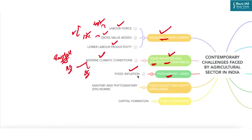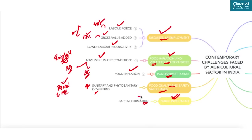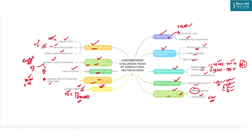Food quality and safety is a challenge as well — Asian and Middle Eastern countries remain the major destinations for Indian agricultural exports, while entry into US and EU markets remains difficult due to high sanitary and phytosanitary norms resulting in high refusal or rejection rates. Finally, public investment is a critical challenge: capital formation is key to agricultural growth, but as a percentage of agriculture GVA, it has moderated in recent years, with the share of the public sector being much lower than that of the private sector.